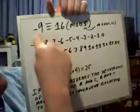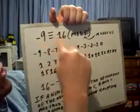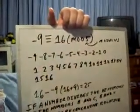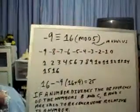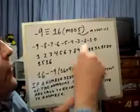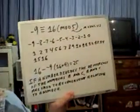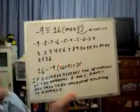So negative 9 and 16 are congruent to each other and negative 9 is the residue of 16 and 16 is the residue of negative 9 relative to this modulus. Now if we said mod 3 instead of mod 5, none of that would be true.